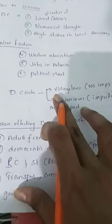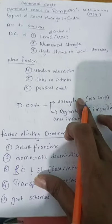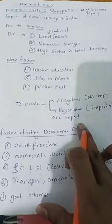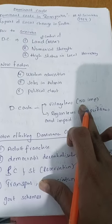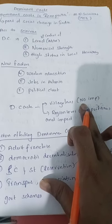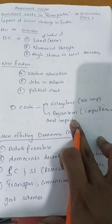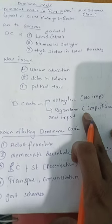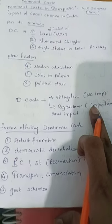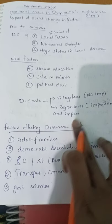Dominant caste operates at two levels: village level and regional level. The village level is considered less significant; the regional level carries greater importance due to its role in the political and economic structure.